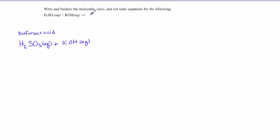So in this reaction, we have H2SO3, which is sulfurous acid, not sulfuric—that's H2SO4. H2SO3 is sulfurous acid. And KOH, potassium hydroxide. So here's our acid, and potassium hydroxide is a strong base. So this is an acid-base neutralization reaction.